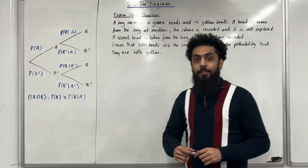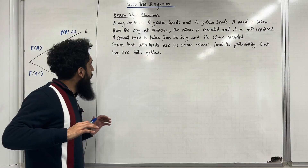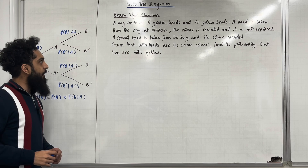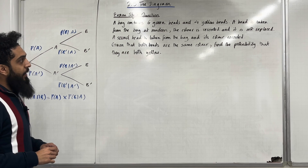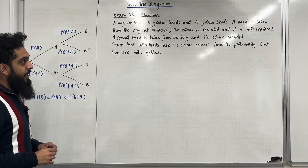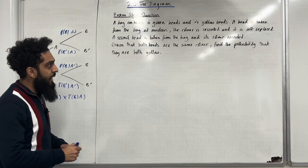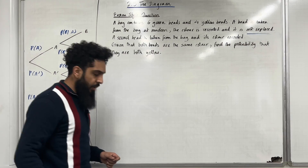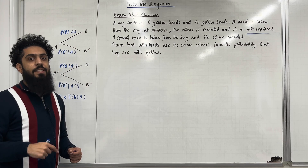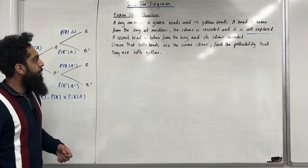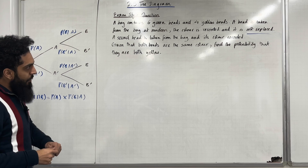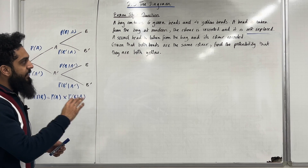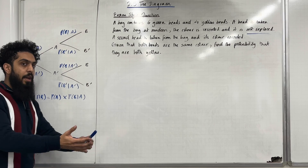Let's have a look at an exam style question. A bag contains six green beads and four yellow beads. A bead is taken from the bag at random. The colour is recorded and it is not replaced. The key element of the question is 'not replaced', so we know that in our second pick the sample size is going to get reduced by one. A second bead is taken from the bag and its colour recorded. Given that both beads are the same colour, find the probability that they are both yellow.